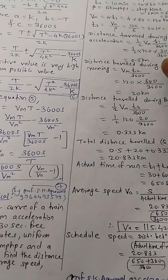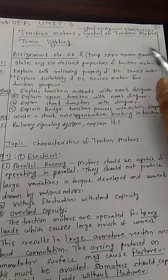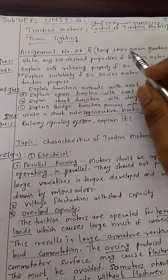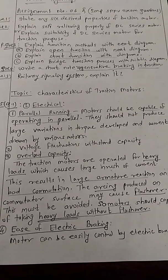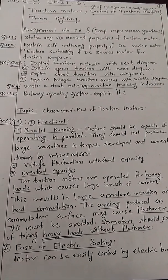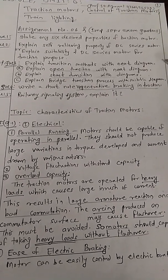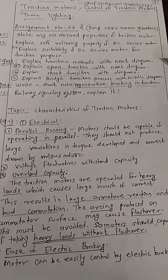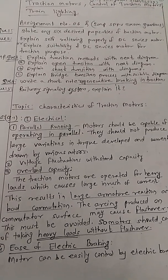Upcoming videos are based on traction motors, control of traction motors, and train lighting on unit number 6. The topics are like characteristic of traction motors, suitability of DC series motor for traction purpose, and regenerative braking, as well as railway signalling system.